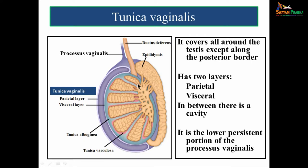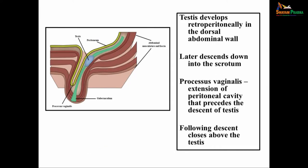The tunica vaginalis covers all around the testis except along the posterior border, and it has two layers: an outer parietal layer and an inner visceral layer, with a cavity in between. Tunica vaginalis is the lower persistent portion of the processus vaginalis. The testis develops retroperitoneally in the dorsal abdominal wall. The processus vaginalis is an extension of the peritoneal cavity that precedes the descent of the testis. Once the testis has descended, this process closes and becomes obliterated, forming the tunica vaginalis.